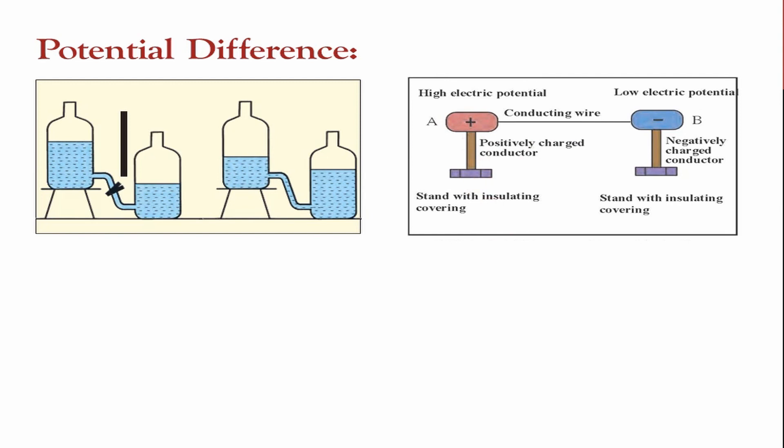Potential difference is essential for the flow of current. If current does not flow, there is no potential difference. For example, consider a battery with a positive side and a negative side. When the battery is dead, both sides have equal charges — almost all the current has gone from the higher level to the lower level. The charge will flow until equilibrium is maintained between both potentials.